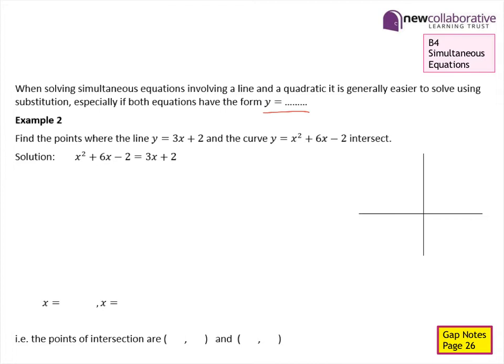Because both equations already take the form y equals some function of x, we can substitute one directly into the other, giving us x squared plus 6x subtract 2 equals 3x plus 2. We rearrange that to x squared plus 3x subtract 4 equals 0. That's a quadratic equation which we can factorise into (x plus 4)(x subtract 1) equals 0. So the x-coordinates of the points of intersection are x equals negative 4 and x equals 1.